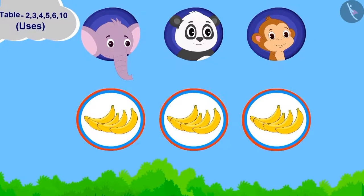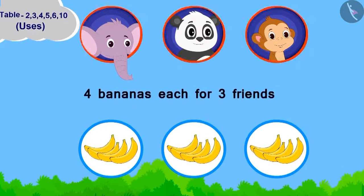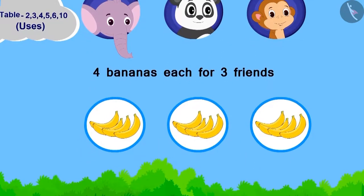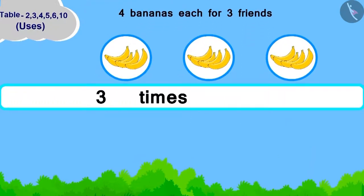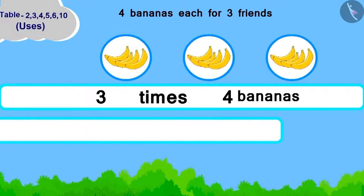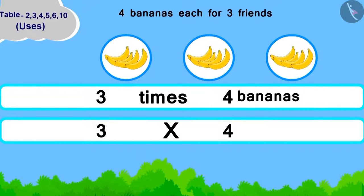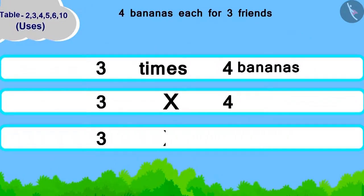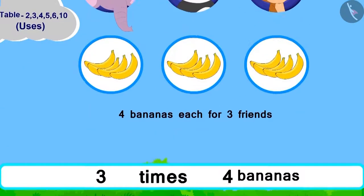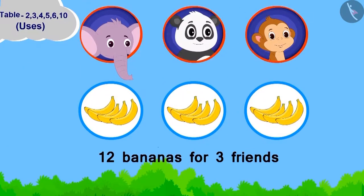How many bananas are to be taken for each friend? Four. Chanda has to take four bananas each for three friends. We can write it like this: three times four bananas. Now, how will we write it in the form of multiplication? Three multiplied by four. Children, can you write its answer by using the table of four?